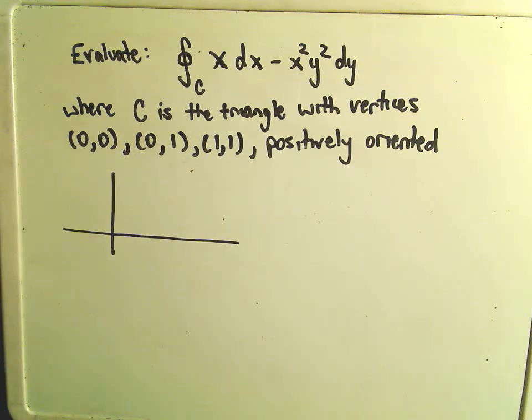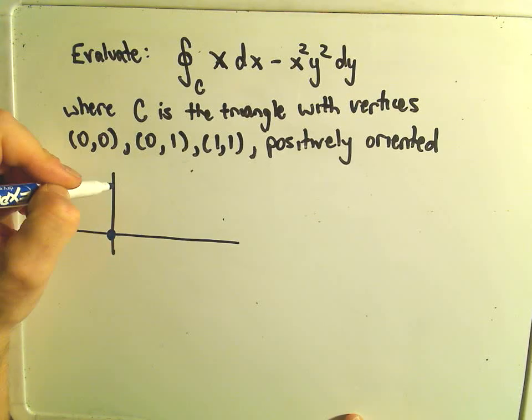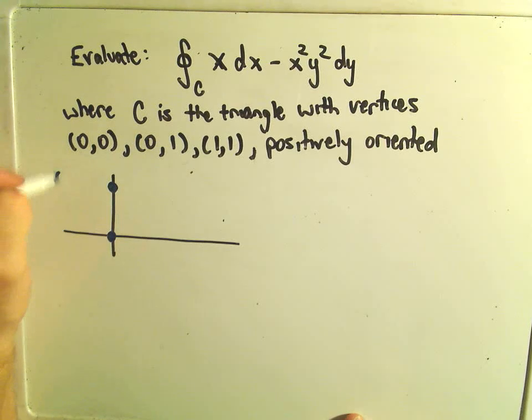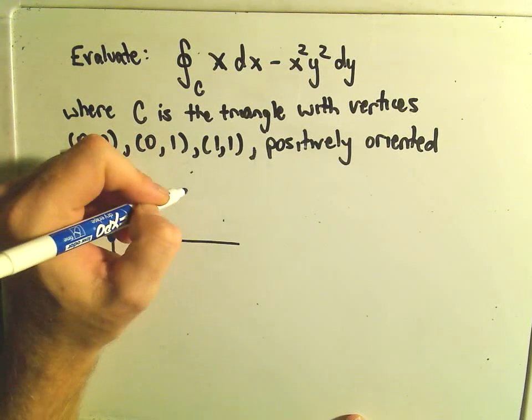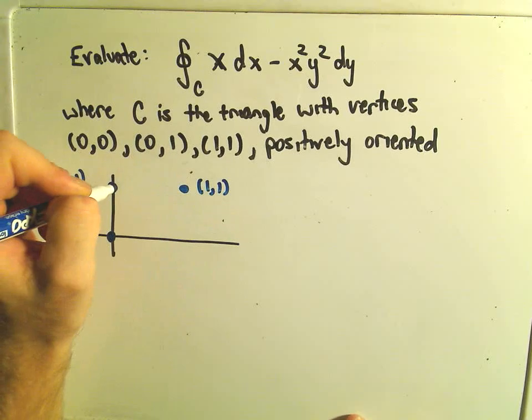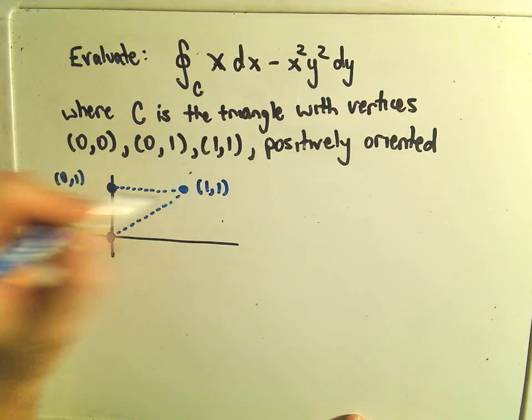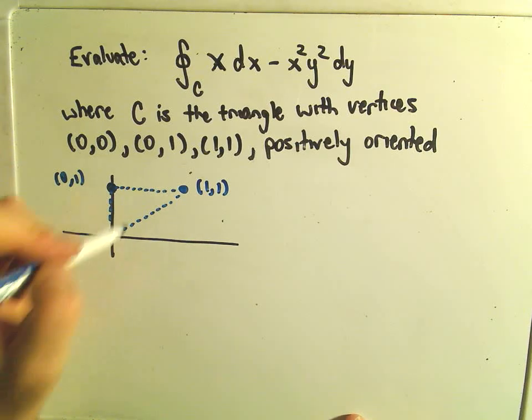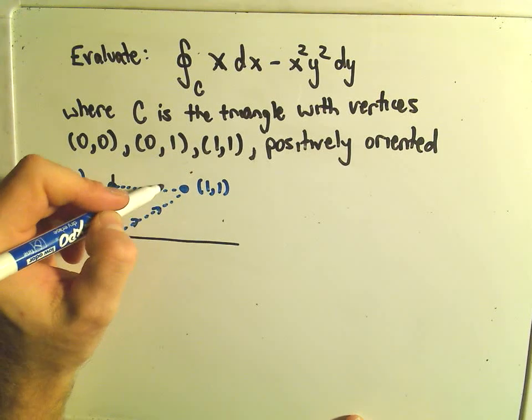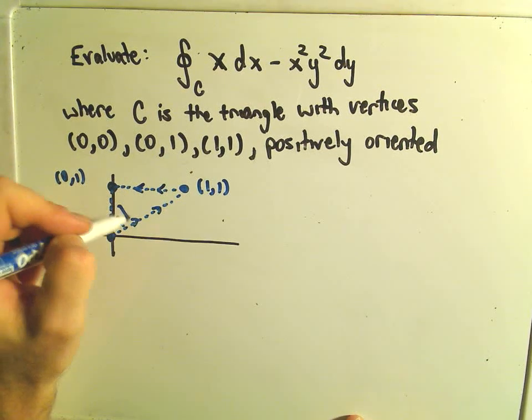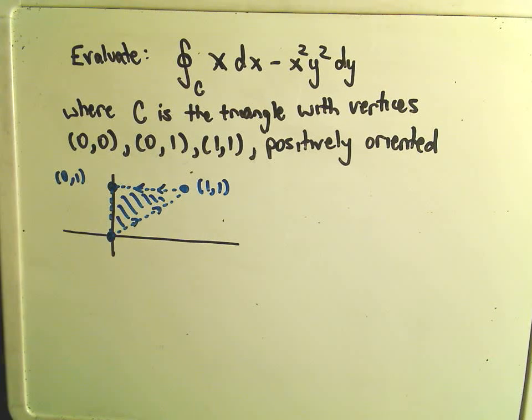So usually what I do is I just sketch the region real quick, so 0, 0, 0, 1 would put us up here, 1, 1 will put us over here, and it says that it's the region enclosed by the triangle formed by those vertices. Again, it's positively oriented. You can check that this has continuous partial derivatives, but this is our region D.